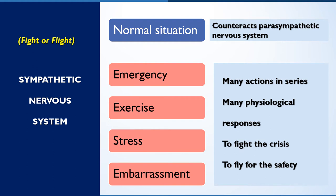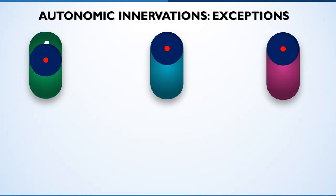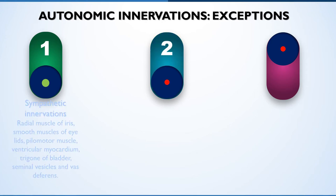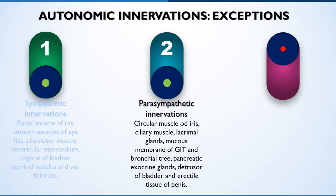Apart from this, there are some exceptions to the basic rule of dual innervation. Let's see them one by one. The first exception is that some organs or body parts have only sympathetic innervation and do not have parasympathetic innervation. Some have only parasympathetic and do not possess sympathetic innervation.